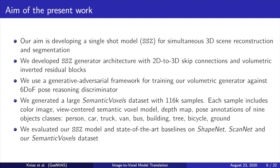We generated a large semantic voxels dataset with 116,000 samples. Each sample includes a color image, view-centered semantic voxel model, depth map, and pose annotations of nine object classes: person, car, truck, van, bus, building, tree, bicycle, and ground. We evaluated our model and state-of-the-art baselines on ShapeNet, ScanNet, and our semantic voxels datasets.